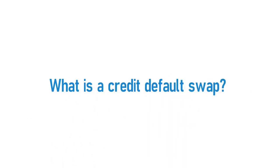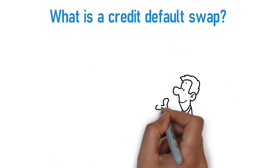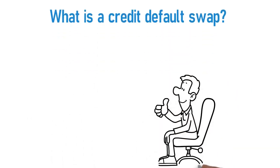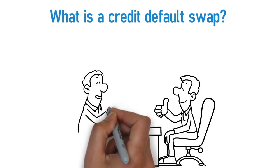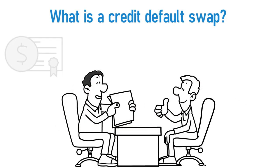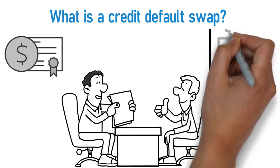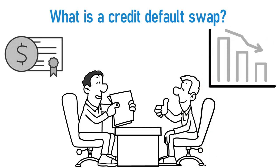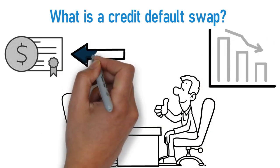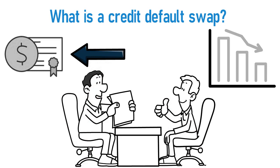What is a credit default swap? A credit default swap is a financial contract whereby a buyer of corporate or sovereign debt in the form of bonds attempts to eliminate possible loss arising from default by the issuer of the bonds. This is achieved by the issuer of the bonds insuring the buyer's potential losses as part of the agreement.